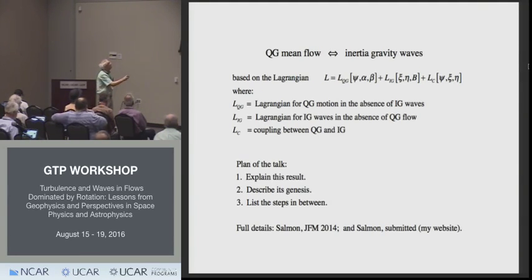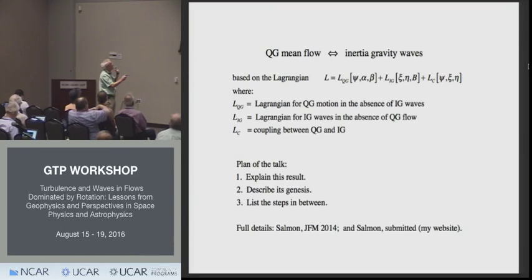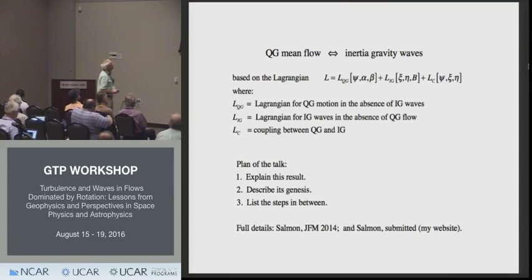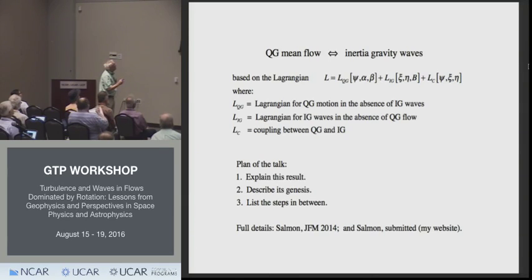There's a piece that involves only the variables associated with the quasi-geostrophic mean flow — by itself it gives quasi-geostrophic flow with no waves. Another piece gives waves with no quasi-geostrophic flow. And then there is the coupling Lagrangian that couples the two together. I decided to give this talk backwards: starting by describing the final results, then describing how you get started, and listing everything in between. I thought that would be more comprehensible.